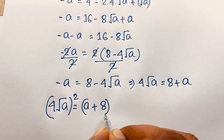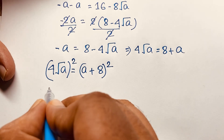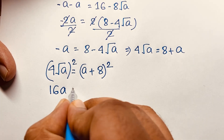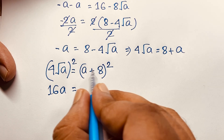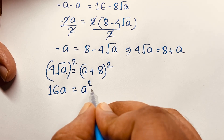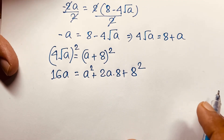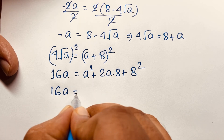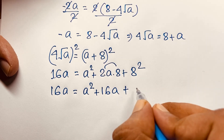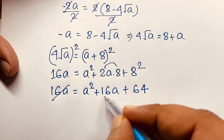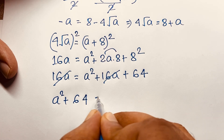Now I square both sides. 4 squared is 16, and square root A squared gives A, so the left side is 16A. The right side is (A + 8)² which equals A² plus 2 times A times 8 plus 8², giving A² plus 16A plus 64. So 16A equals A² plus 16A plus 64. The 16A terms cancel out. We find A² plus 64 equals 0.